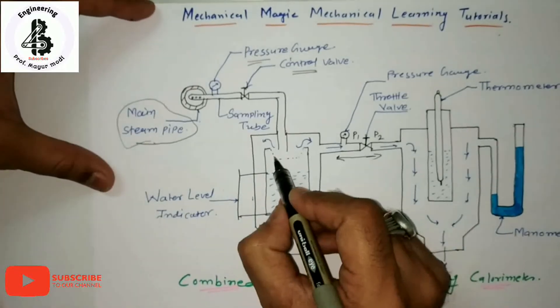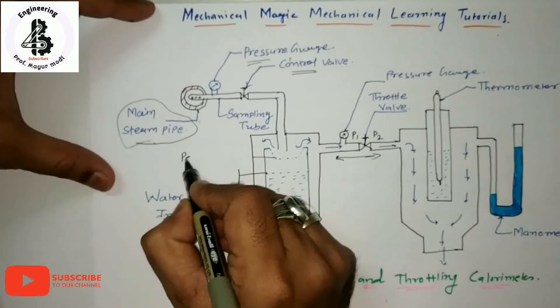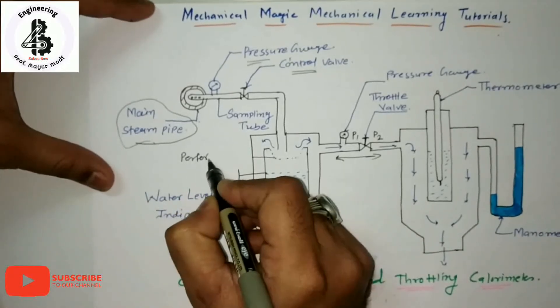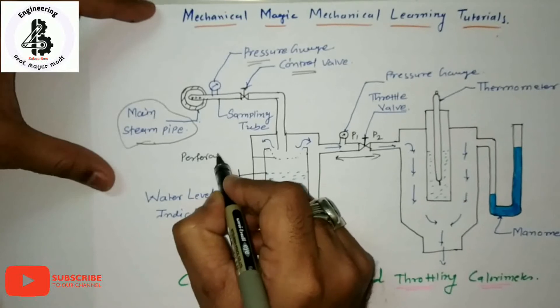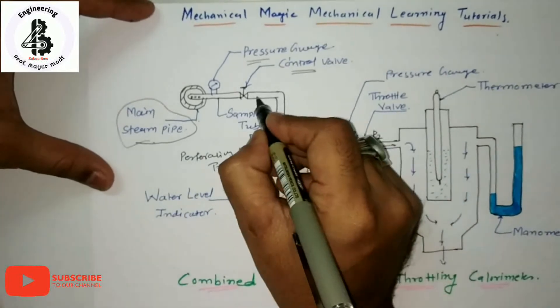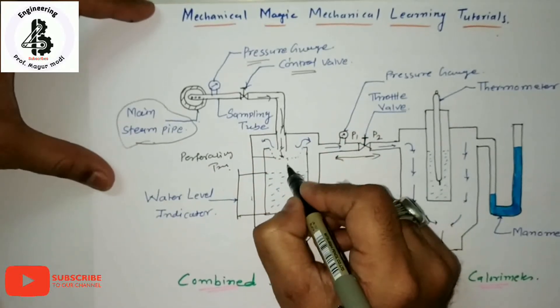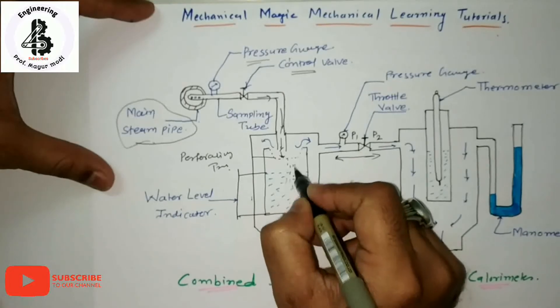That is a separating device with a perforating plate tray. By the passing of that particular steam it strikes here, so the wet particles are collected in that collector.